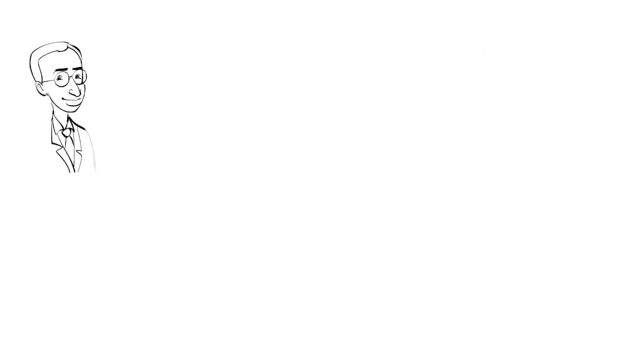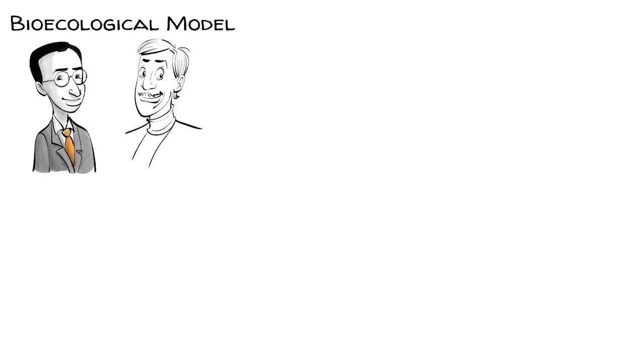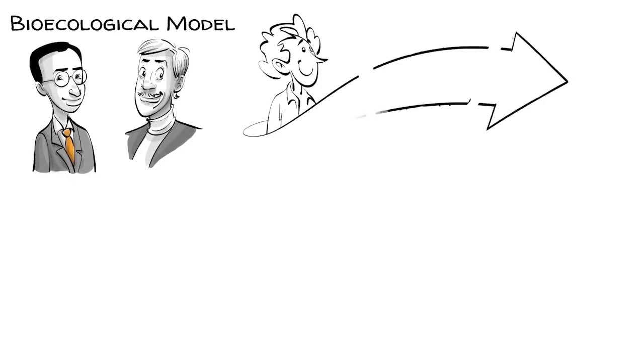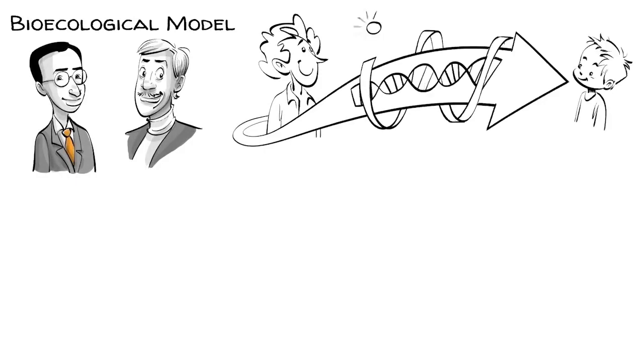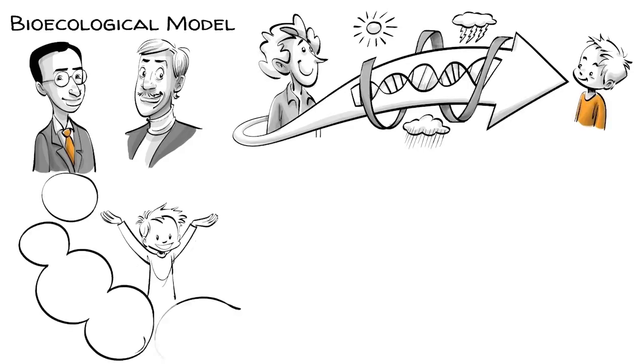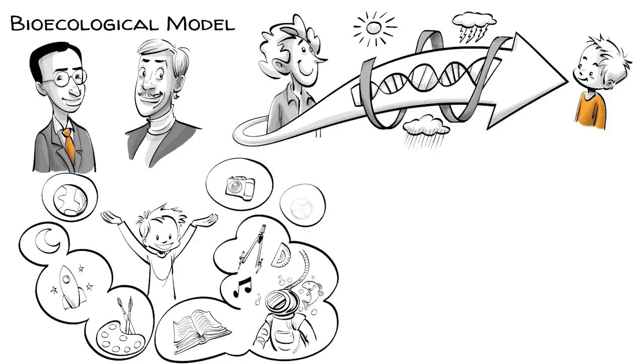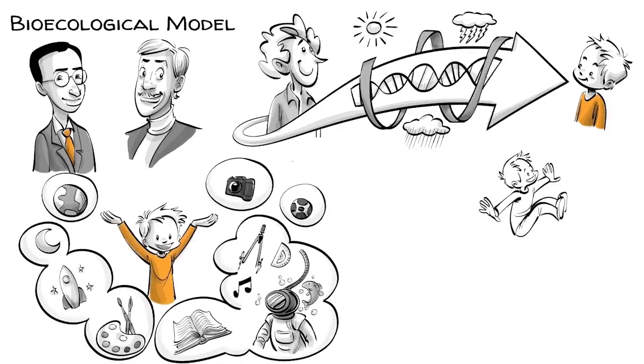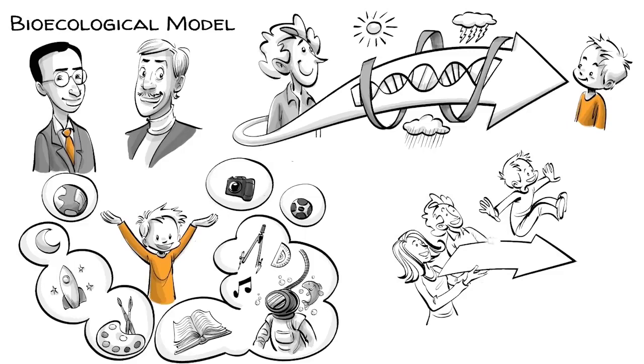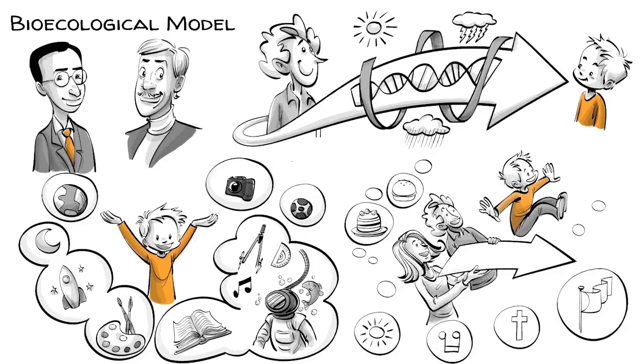Decades later, Bronfenbrenner and Stephen Sesse proposed an extension of this theory, called the Bioecological Model. This new model recognizes gene-environment interactions and acknowledges the role of heritability, but adds that genes themselves are under the influence of the environment. In other words, the process of heritability varies in a magnitude of potentials. How much a child can make of the potential they inherit depends on the ecological environment.